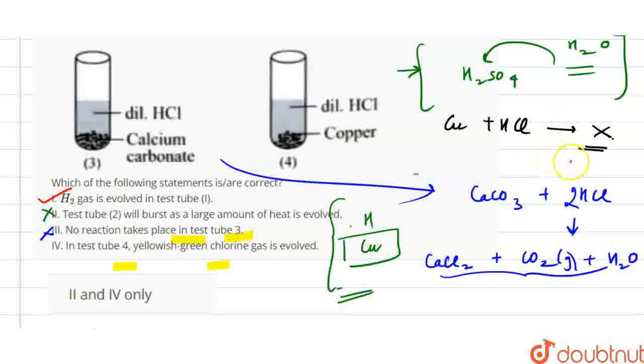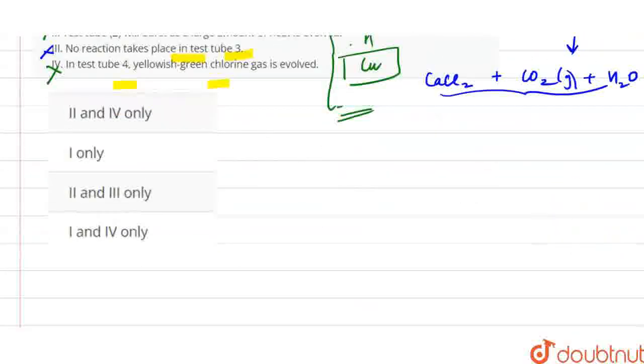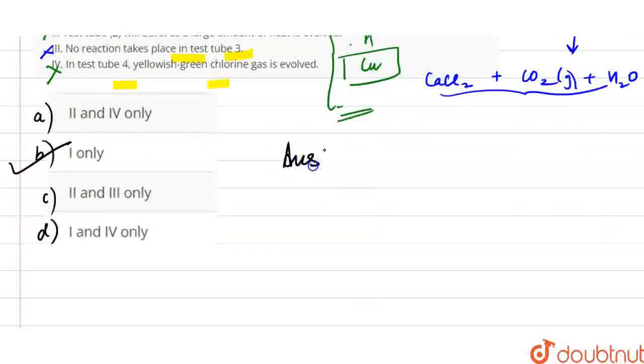So with Cu and HCl, there will not be any reaction. The correct statement is only one. So if we go to the options, the correct option is option B. Thank you.